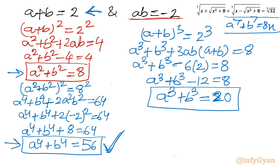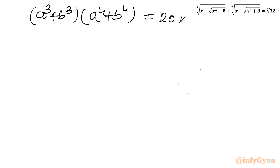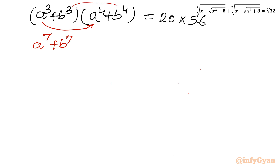Now I will multiply the sum of cubes and the sum of 4th powers: (a³ plus b³) times (a⁴ plus b⁴) equals 20 times 56, which is 1120. Expanding the left side: a⁷ plus b⁷ plus a³b⁴ plus a⁴b³ equals 1120. The cross terms factor as a³b³(b plus a), which is (ab)³ times (a plus b).